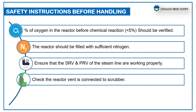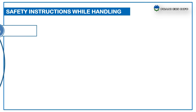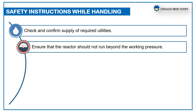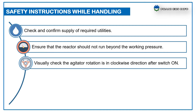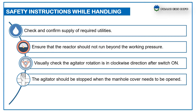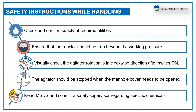Check that the reactor temperature and pressure gauges are working properly. During reactor handling: check and confirm supply of required utilities by checking the utility header pressure gauge or with the utility operator. Ensure that the reactor should not run beyond the working pressure. Visually check that the agitator rotation is in the clockwise direction. The agitator should be stopped when the manhole cover needs to be opened.